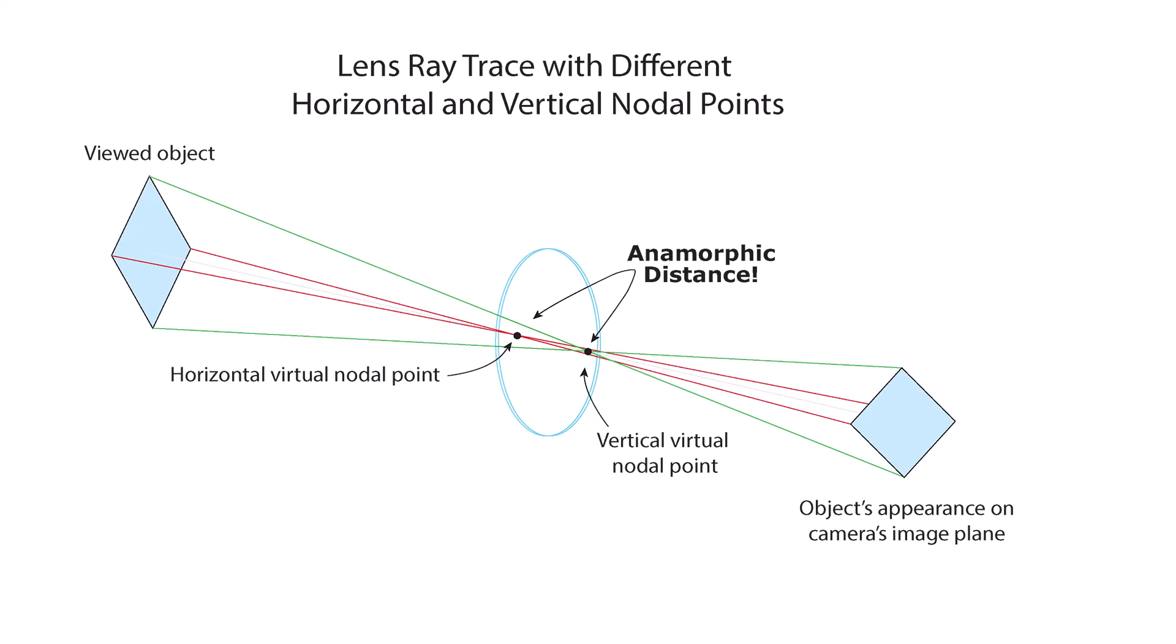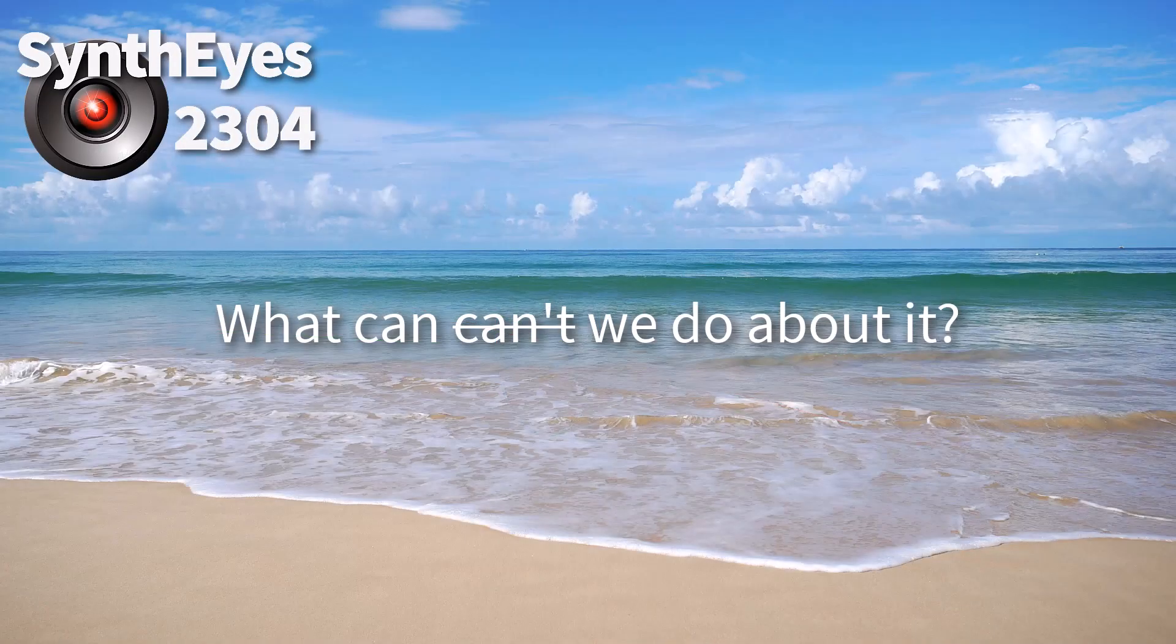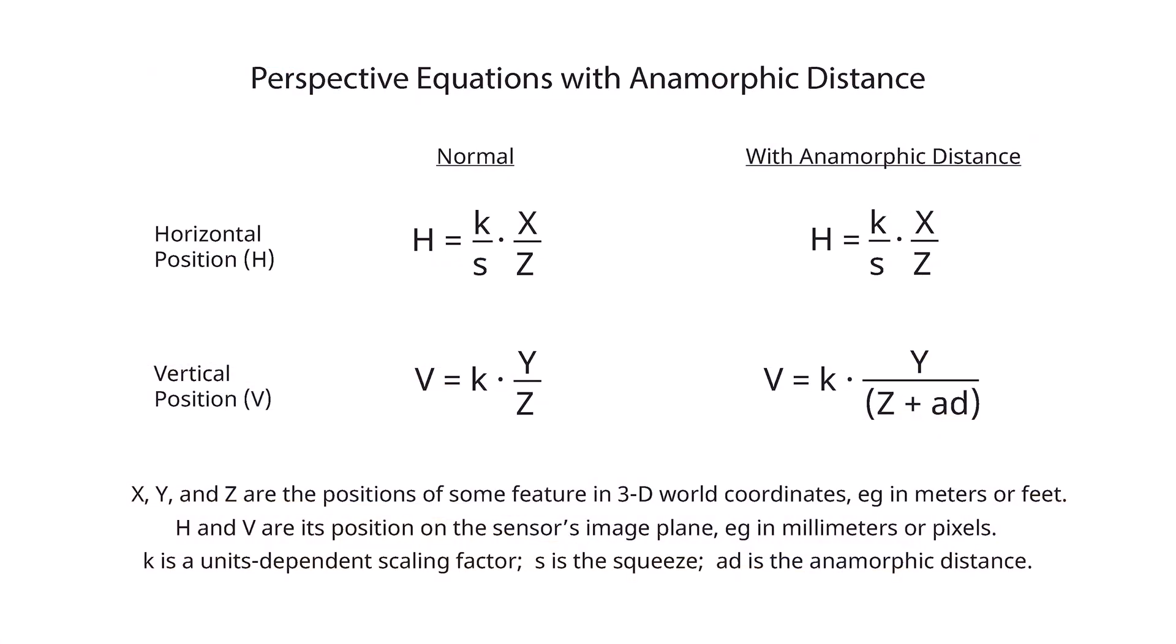The effect of two nodal points requires a 3D solution. We need to change the basic perspective transform. You know, railroad tracks, perspective lines, vanishing points, etc. We'll take a real quick look at what anamorphic distance does to perspective.